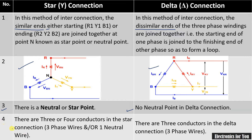There are two types of star connection: three-wire connection and four-wire connection. In star connection, if one more wire — the neutral wire — is added, it becomes a four-wire three-phase connection. So in star connection we can have three wires or four wires for conduction.